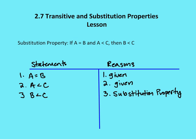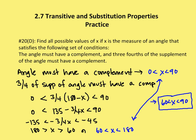Now let's take a look at a problem using some of the things we've learned, including substitution and the transitive property. We're asked to find all possible values of X if X is the measure of an angle satisfying the following conditions: the angle must have a complement, and three-fourths of the supplement of the angle must have a complement as well.